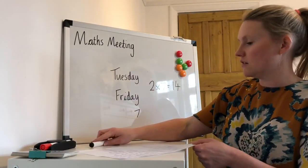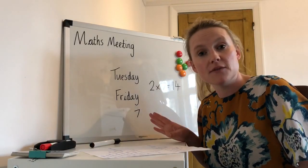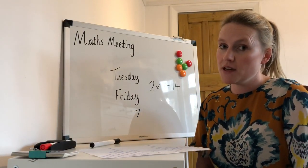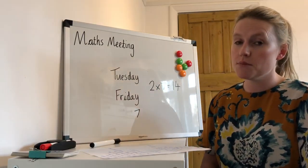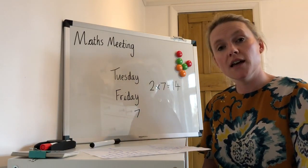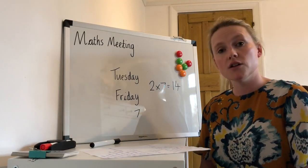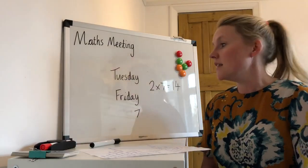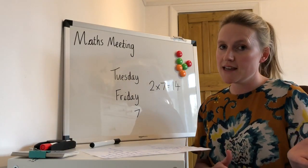Okay, so that was our days of the week. Now let's look at our months of the year. January, February, March and April, May, June, July and August, September, October, November, December — these are the months of the year.